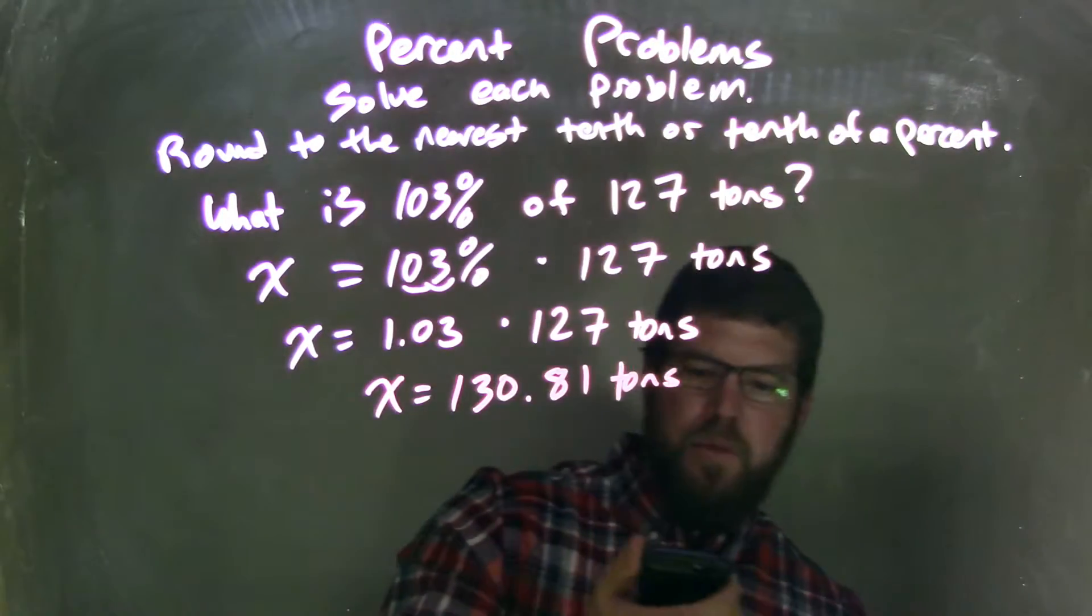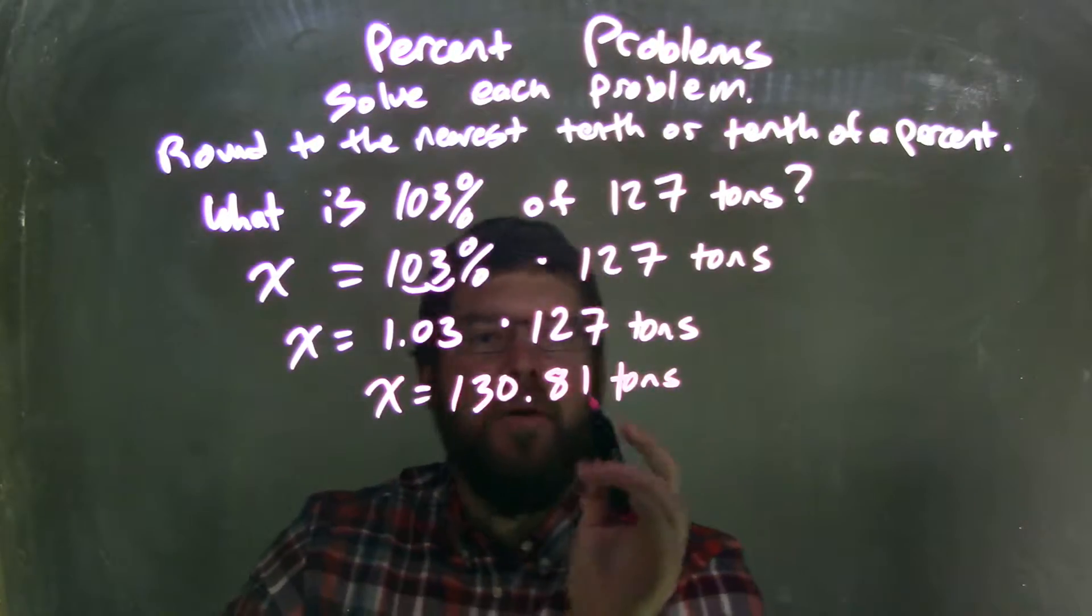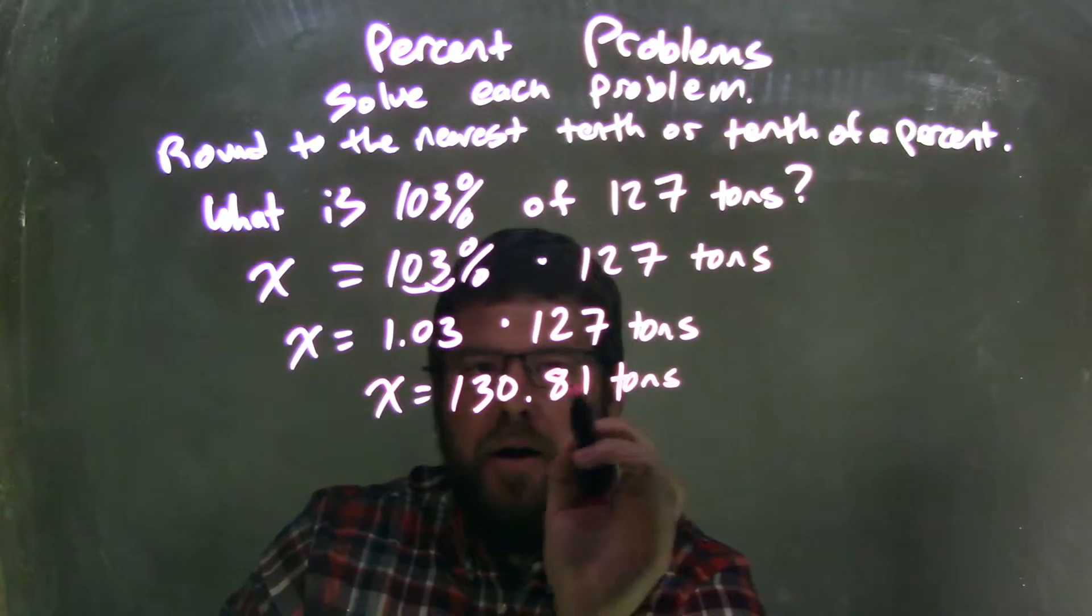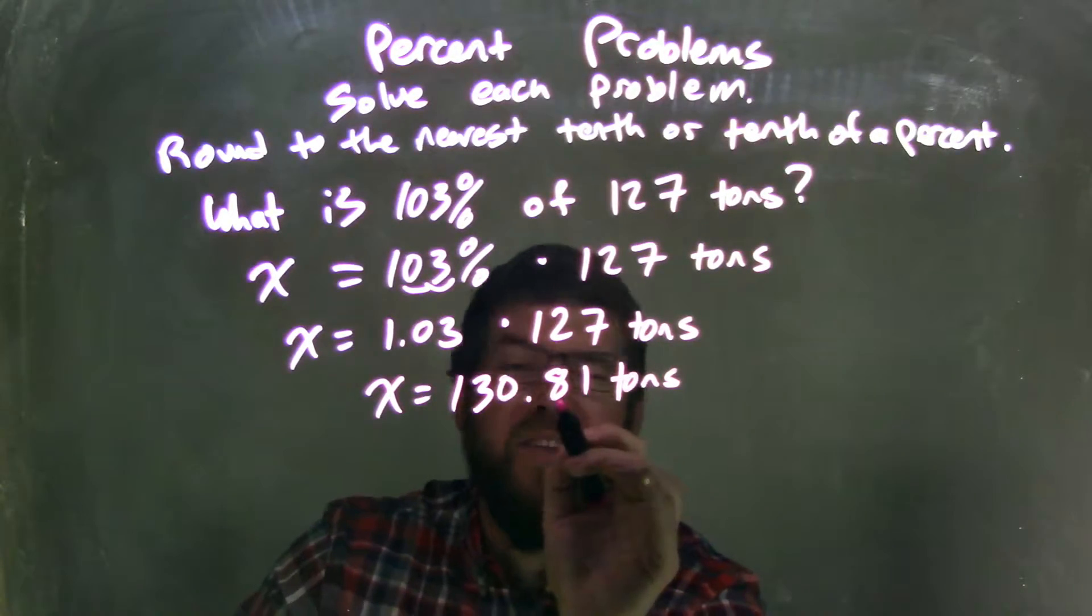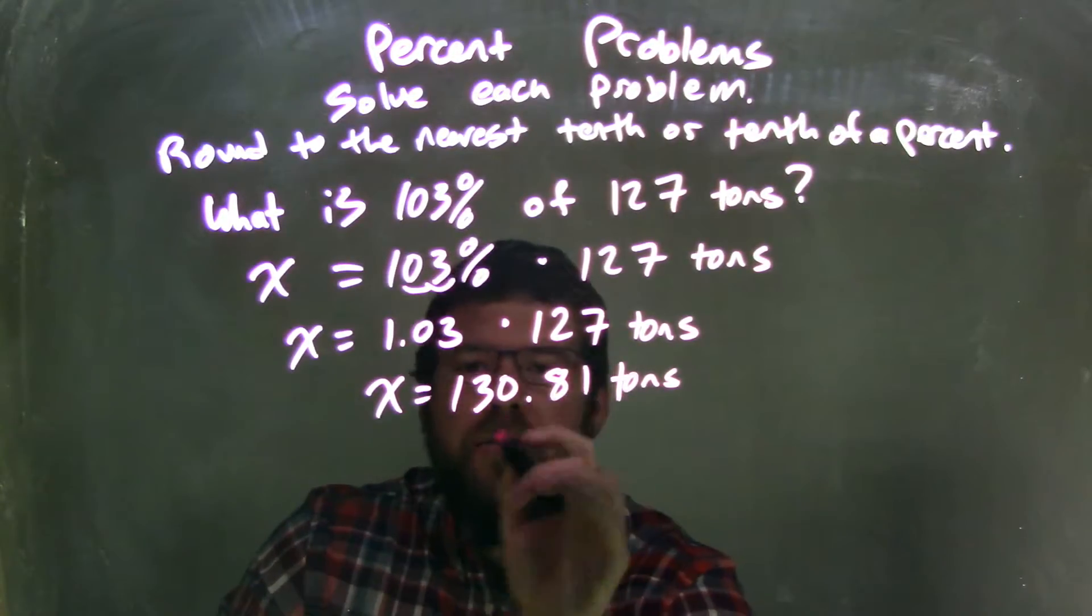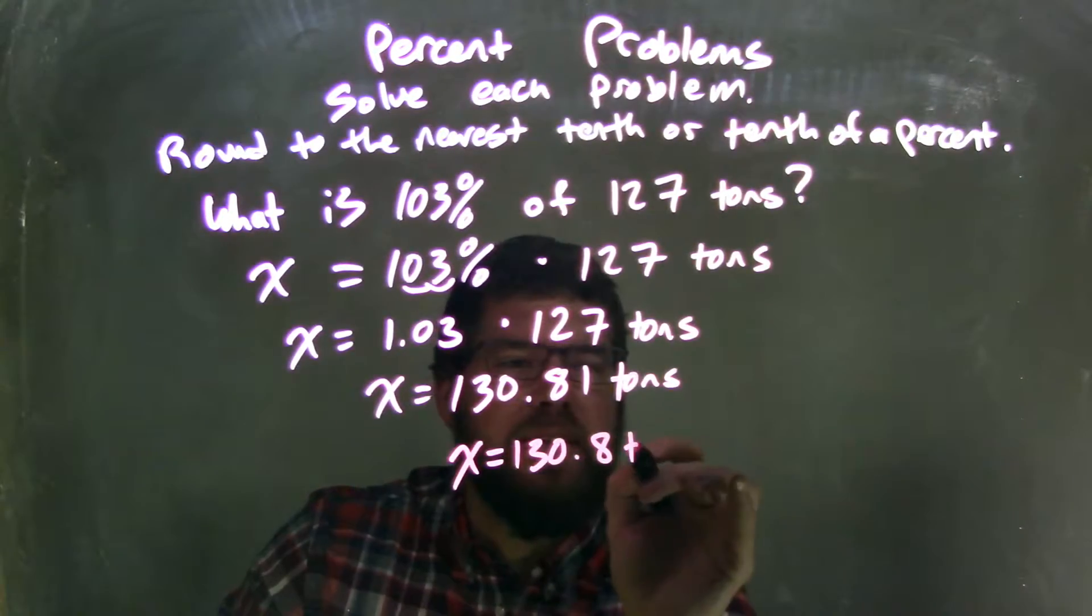I need to round that to the nearest tenth. Looking at the 8 and the 1, the 1 causes the 8 to stay where it is. So I'm left with x equals 130.8 tons.